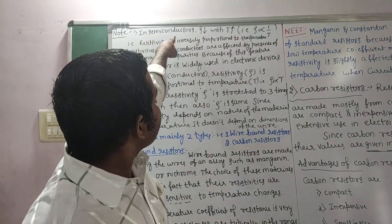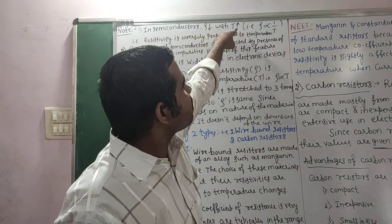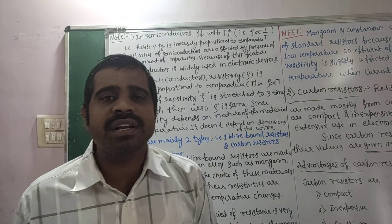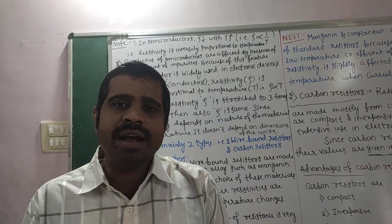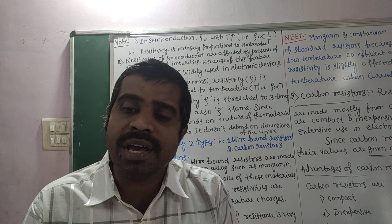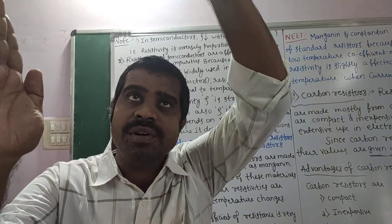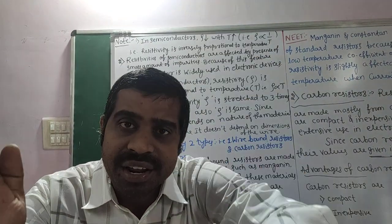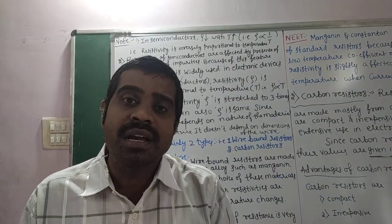In the case of semiconductors, as the temperature increases, resistivity decreases and hence conductivity increases. Conversely, if temperature decreases, resistivity increases. Overall, resistivity and temperature are inversely proportional in semiconductors.